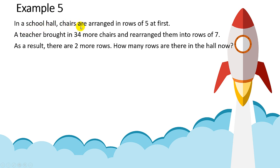In a school hall, chairs are arranged in rows of five. A teacher brought in 34 more chairs and rearranged them into rows of seven. As a result, there are two more rows. How many rows are there in the hall now?